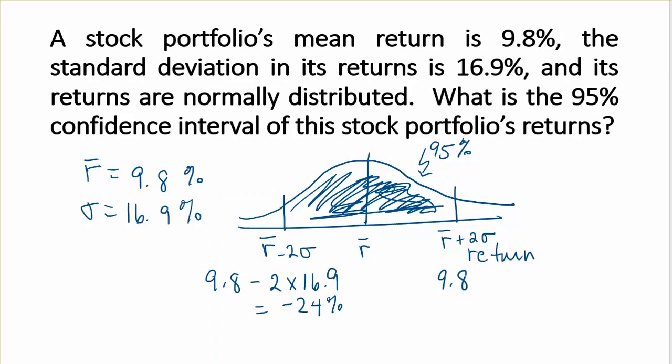And then we have 9.8 plus 2 times 16.9, giving us an upper bound of 43.6%.